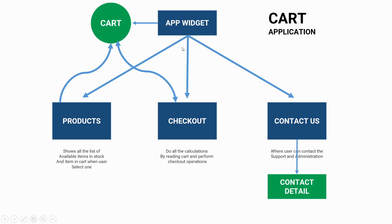So in Flutter, if a state is a global state or defined in the app widget, we call it app state — meaning all the other screens can access this state. And if a state is a local state, we call it ephemeral state — a state that is defined inside a particular widget.